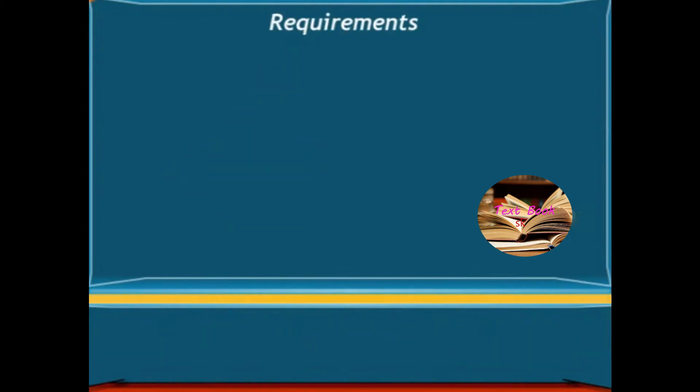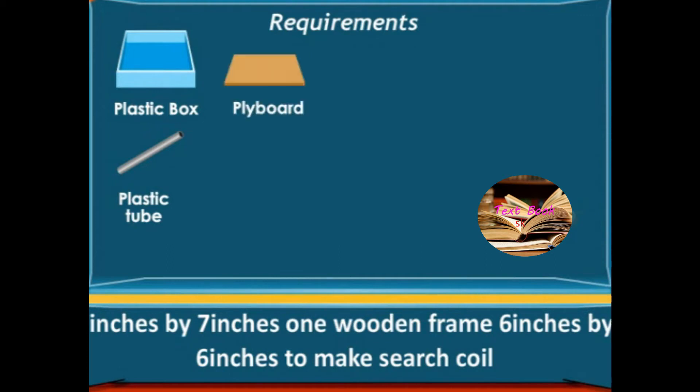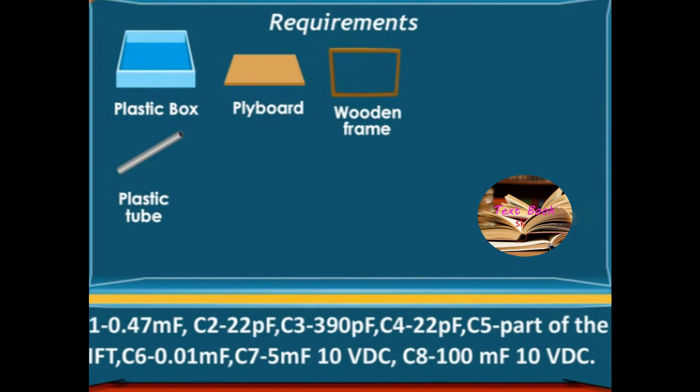Requirements: one plastic lunchbox, rigid plastic tube, one plyboard 7 inches by 7 inches, one wooden frame 6 inches by 6 inches to make the search coil, 8 capacitors.